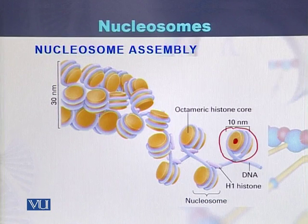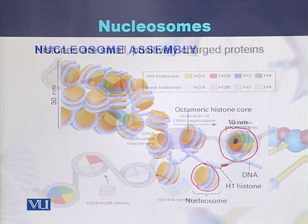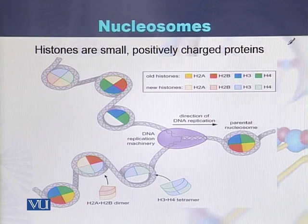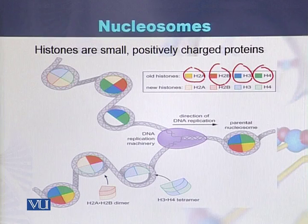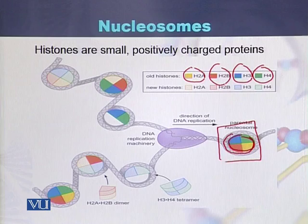The DNA present between 2 nucleosomes is called linker DNA. In the second colored diagram, we can see the histone molecules H2A, H2B, H3, and H4. Two molecules each of these 4 histones are present in the form of a ball consisting of 8 molecules. The DNA is wrapped around this ball, and this structure is called a nucleosome.